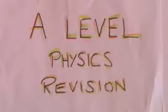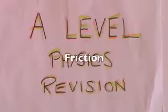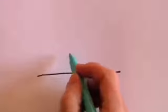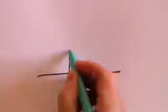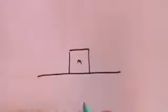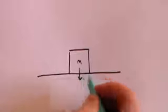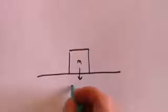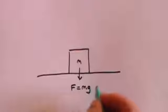Today we're continuing in the A-Level Physics Revision Series looking at friction. Frictional forces act to oppose motion or oppose a force which is attempting to cause motion. If we have a level surface and we place a block on it — you could think of this as a bookcase of mass m — there will be a gravitational force acting downwards which equals mg.